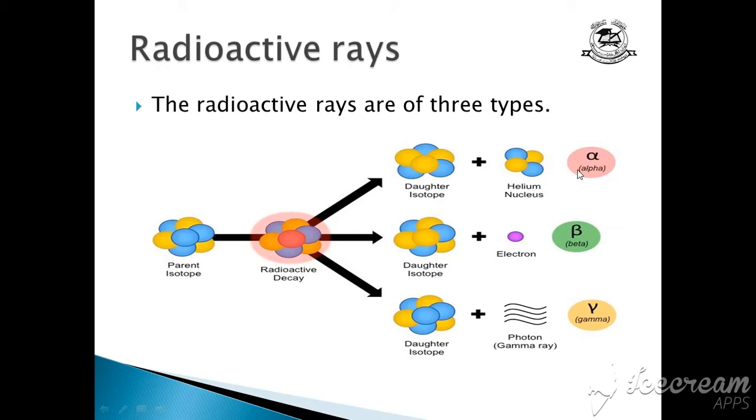Beta rays are basically electrons, which means they have negative charge. Gamma rays do not have any charge and are represented as photons, a kind of energy. So basically there are three kinds of rays: alpha rays, beta rays, and gamma rays.